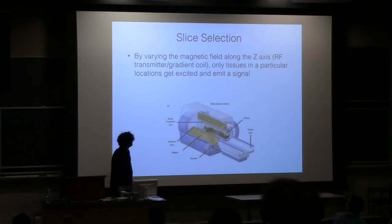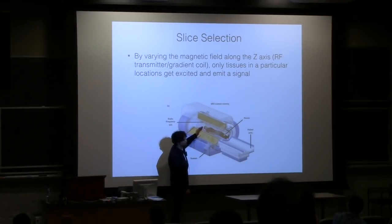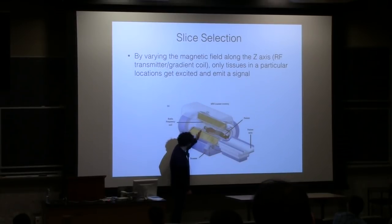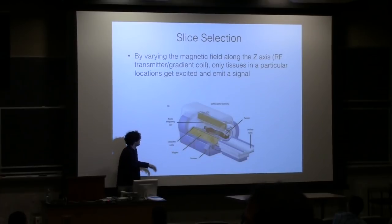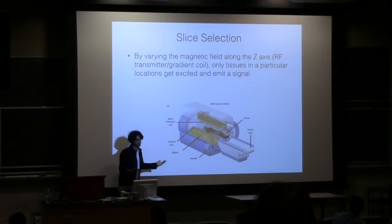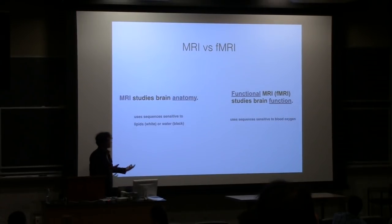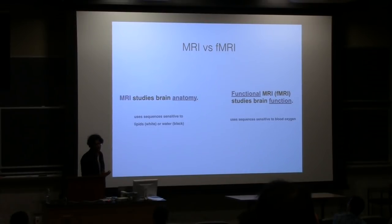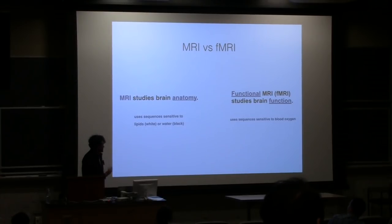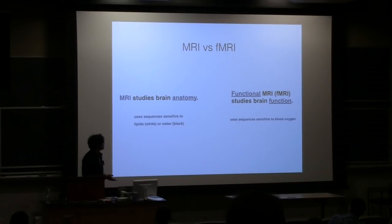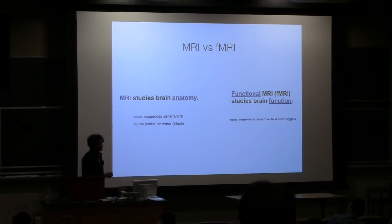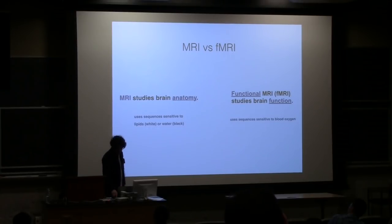You can vary the magnetic field along a certain area, give your radio frequency pulses along a certain place within the magnet, and then image tissue characteristics at that particular location. If we want to look at brain images, we'll put our receiver coil right where the brain is. A common question is what is the difference between MRI and fMRI. You use the same scanner to get fMRI and MRI images, but MRI studies brain anatomy using sequences sensitive to lipids or water within tissues, whereas functional MRI looks at function — more rapid things happening in your tissue — and is specifically related to blood oxygenation.